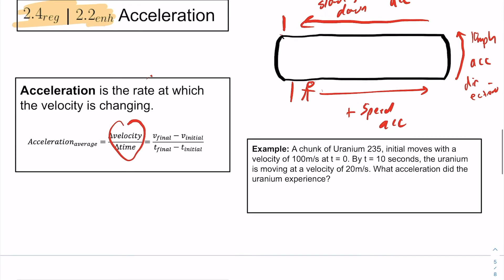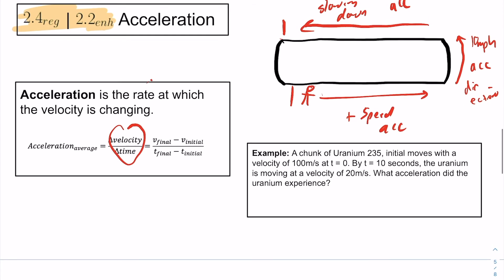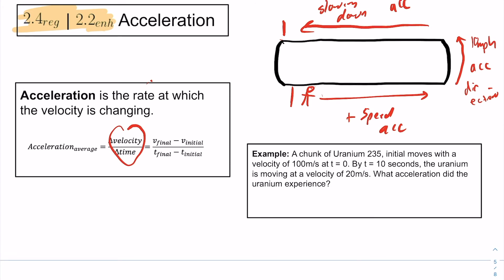Let's try an example. A chunk of uranium-235 initially moves with a velocity of 100 meters per second at t equals 0 seconds. By t equals 10 seconds, the uranium is experiencing a velocity of 20 meters per second. What acceleration did the uranium experience? Let's let you guys try it first. Go ahead and plug into our average acceleration equation.